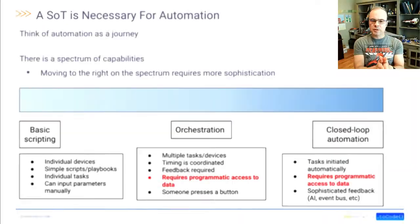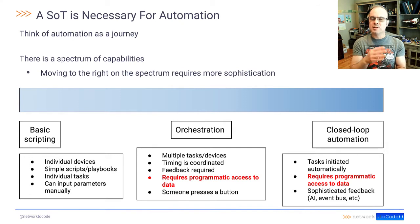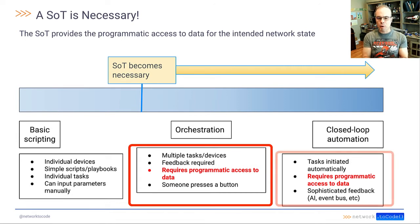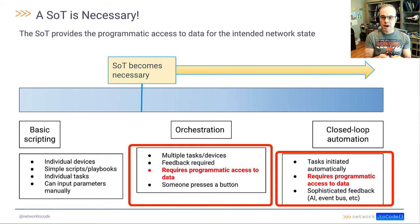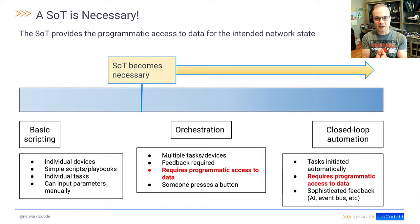As you start moving to the right, getting to orchestration and closed loop automation where timing is more important, feedback is required, and there are multiple tasks or devices in the workflow being automated. That type of automation requires programmatic access to data, so it's no longer possible to input parameters manually. The automation architecture needs a source of truth to access programmatically.